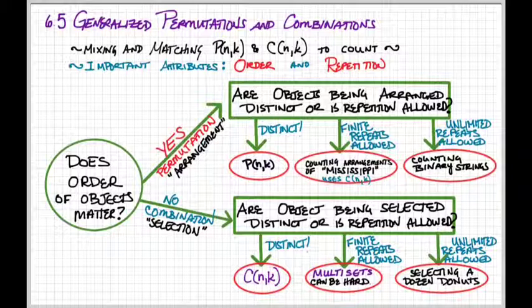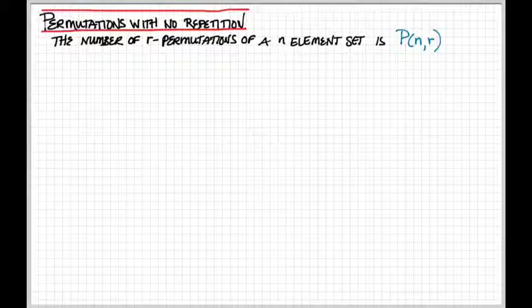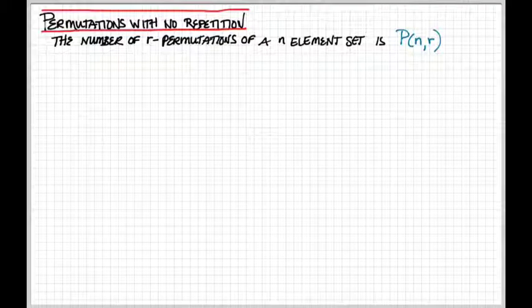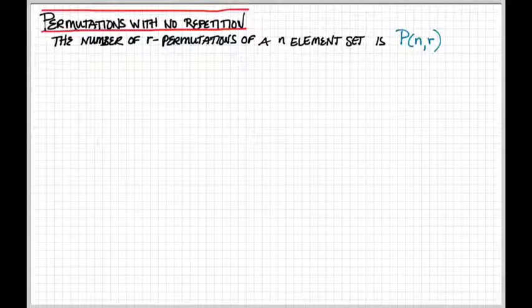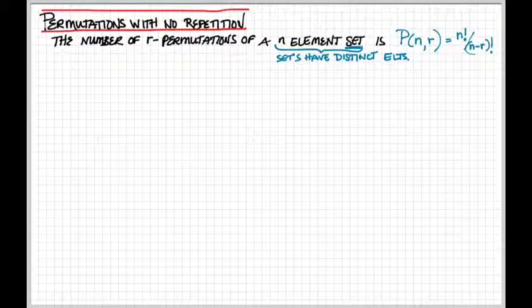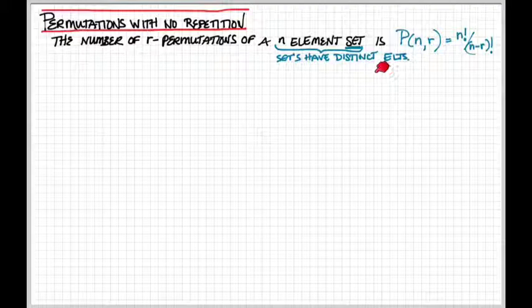So let's go through them one by one and see what kind of formulas we get. So if we're doing permutations with no repetition, these are just our permutations of an N-element set, and that's P of N,r. We know the trigger here is that it's called an N-element set, and sets have distinct elements. That's how you know there's no repetition involved.